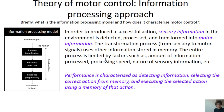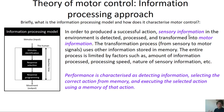To capture this theoretical framework in a few sentences: information processing is a framework that characterizes motor control as requiring that, in order to produce a successful action, sensory information in the environment is detected, processed, and transformed into motor information. The transformation from sensory to motor signals uses information stored in memory. This entire process is limited by factors such as the amount of information processed, the processing speed of our central nervous system, and the nature of the sensory information we're dealing with.